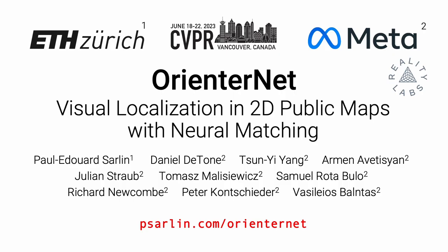To summarize, we demonstrate that 2D semantic maps are an effective representation for visual positioning. Our network generalizes to augmented reality and robotics data without any retraining, and enables anyone to localize anywhere for free. The code is publicly available — try it yourself with your own pictures. Check out the paper for quantitative results and additional visualizations. Thank you for watching.